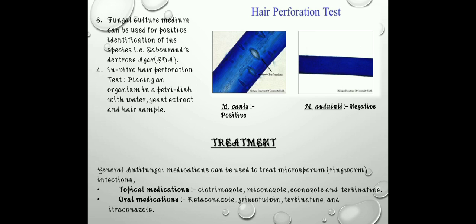Next is the treatment of Microsporum species ringworm infections. General antifungal medications can be used. There are topical medications and oral medications, which are all derivatives of the azole class including Fluconazole. Topical medications include Clotrimazole, Miconazole, Econazole, and Terbinafine. Oral medications include Ketoconazole, Griseofulvin, Terbinafine, and Itraconazole. These antifungals rupture the cell wall of the fungi and gradually diffuse it, and can be very useful against ringworm infections.